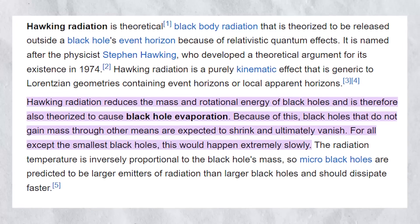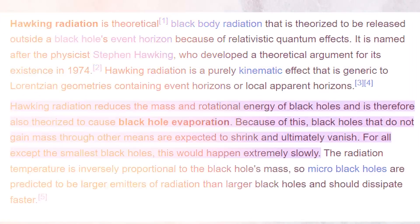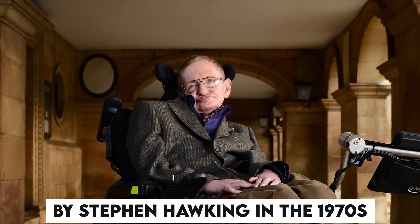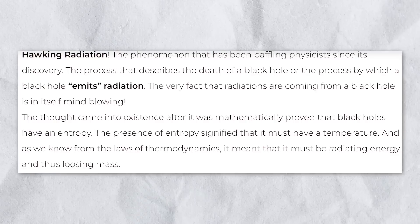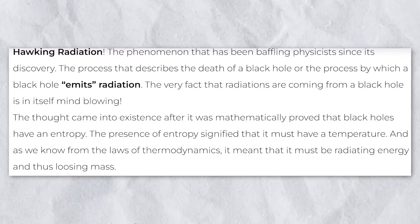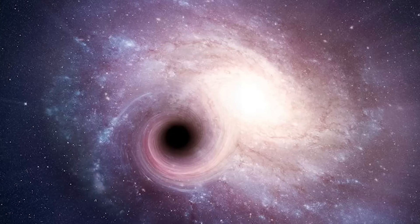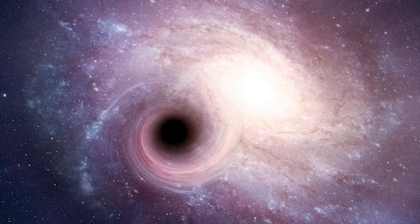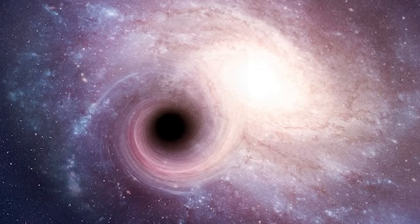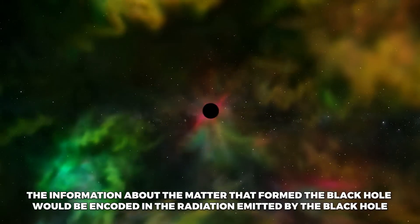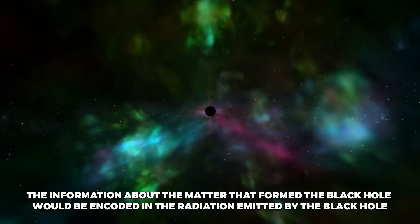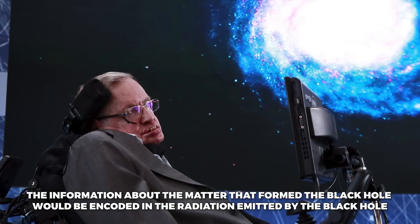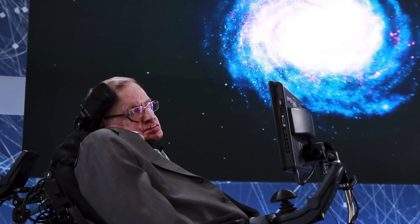A third theory is the Hawking radiation hypothesis, which was proposed by Stephen Hawking in the 1970s. According to this hypothesis, black holes emit radiation due to quantum mechanical effects near their event horizons. This radiation carries away energy from the black hole and eventually causes it to evaporate. The information about the matter that formed the black hole would be encoded in the radiation emitted by the black hole, which means that the information is not lost, but is instead stored in the radiation.